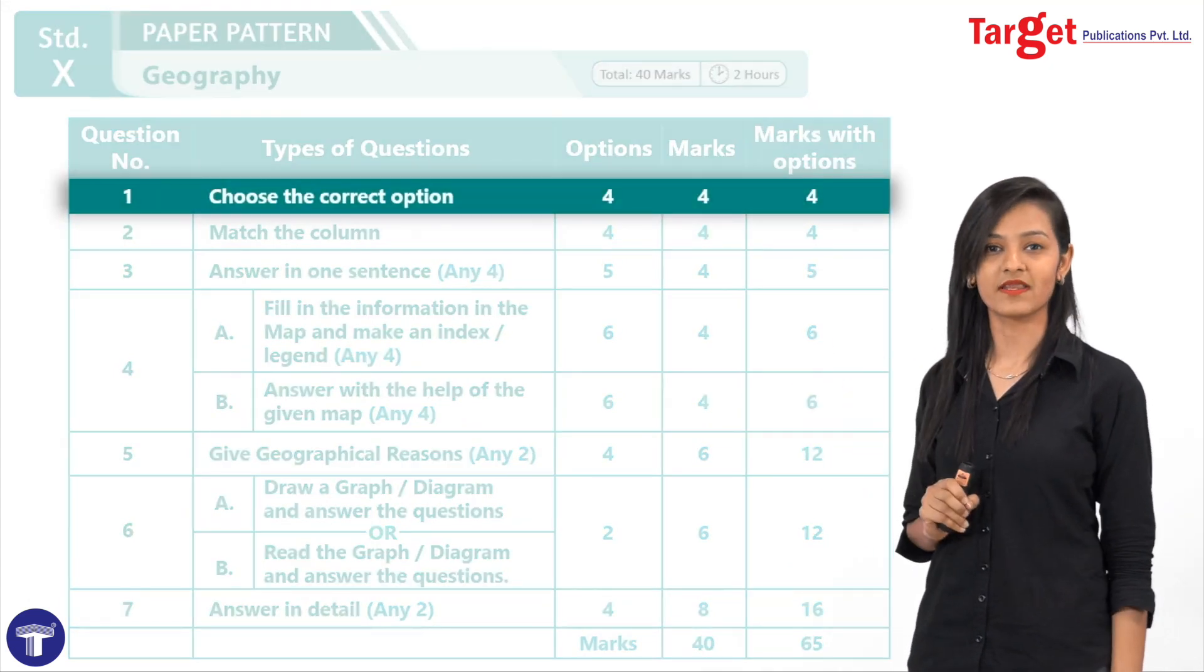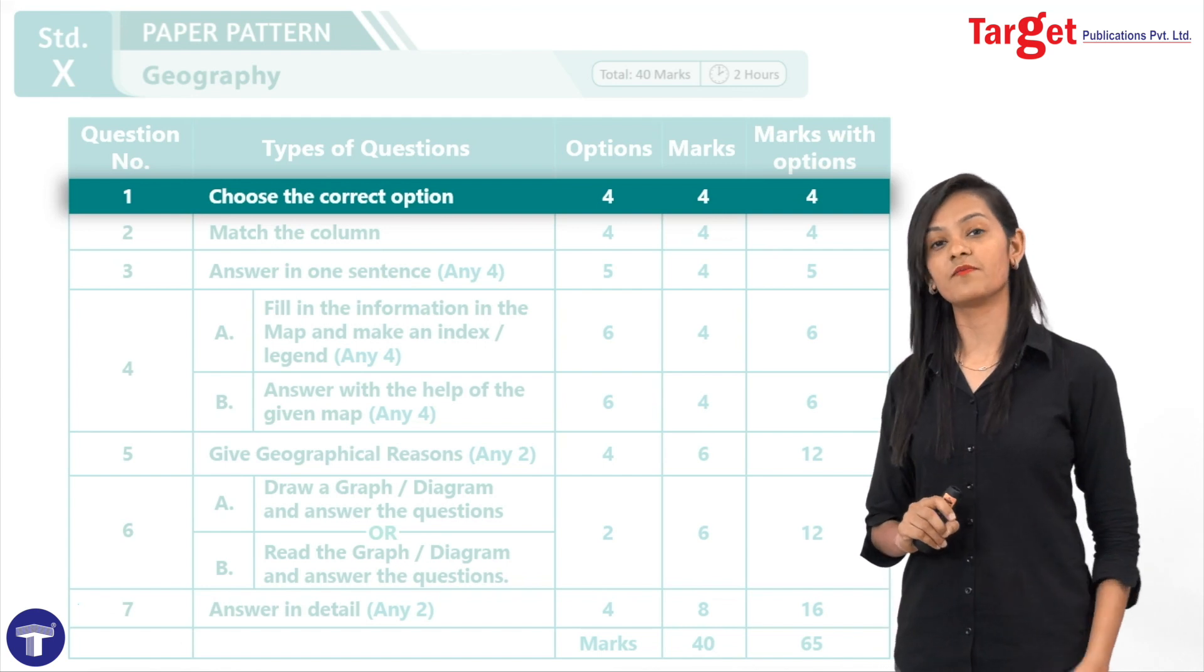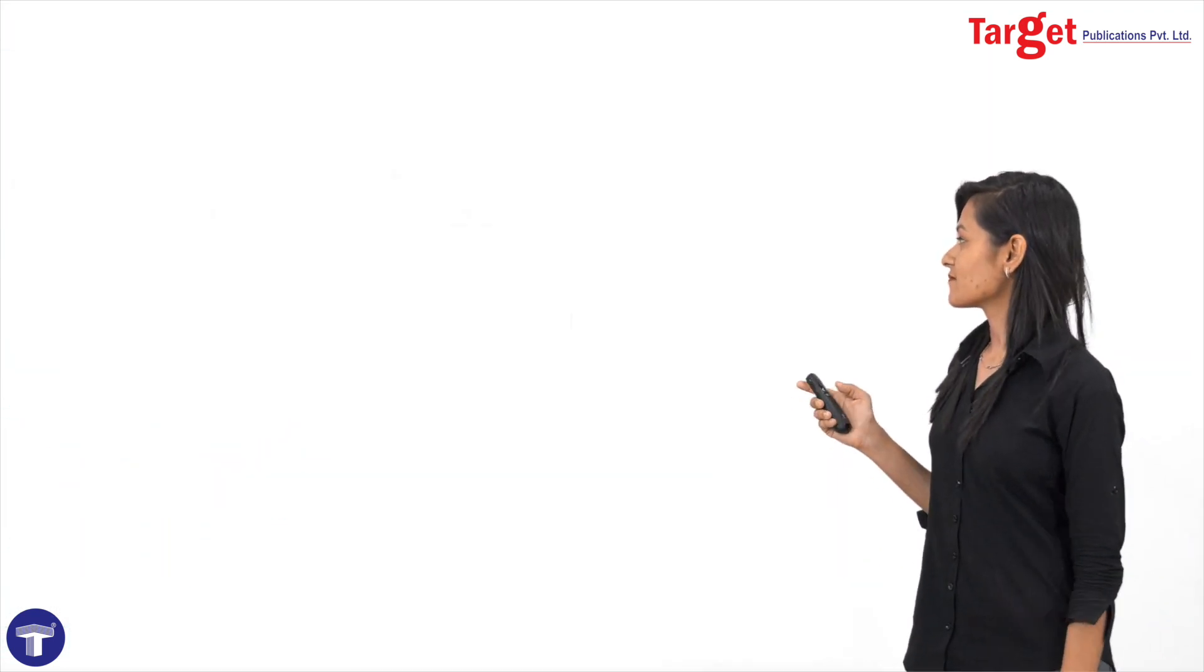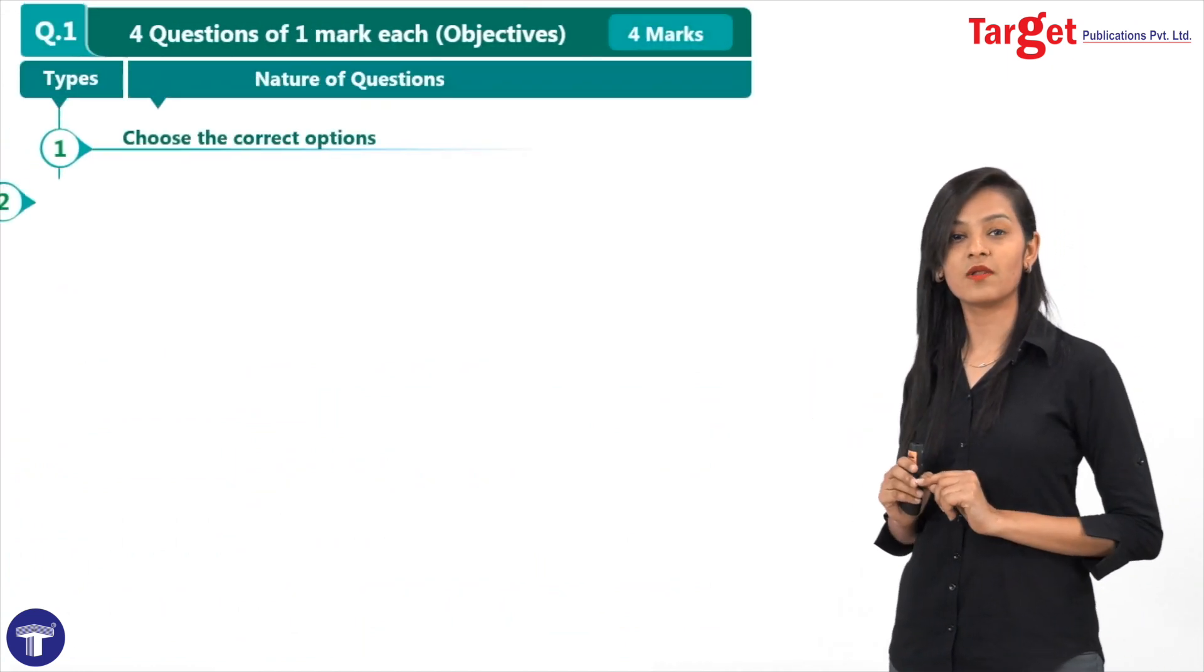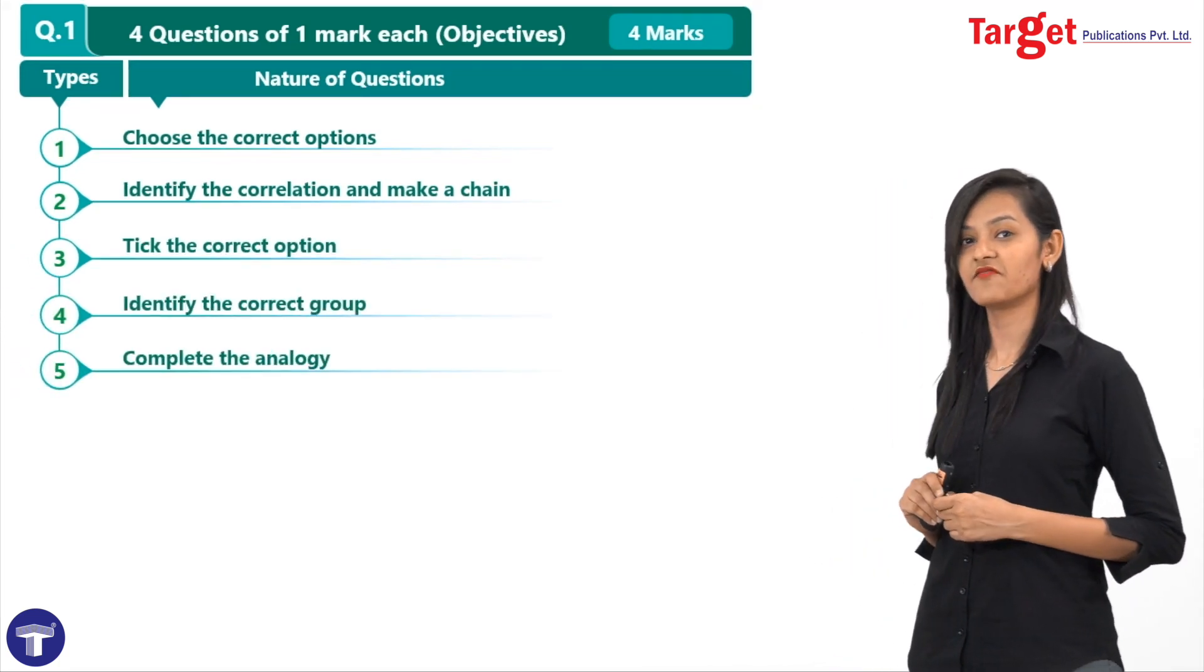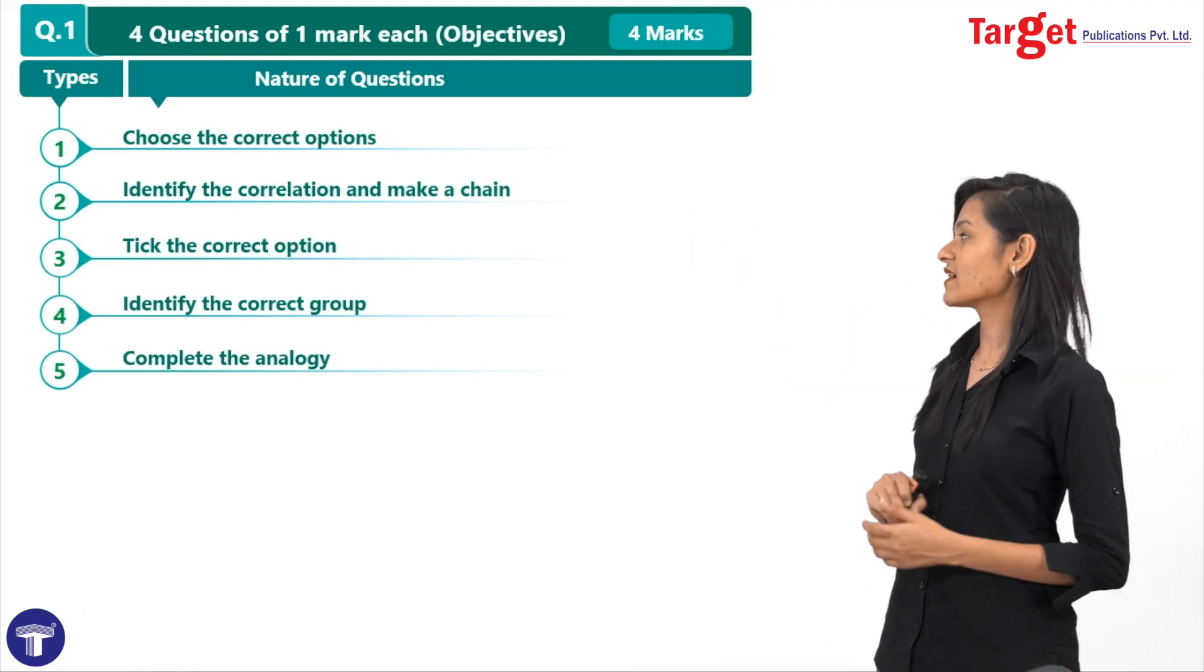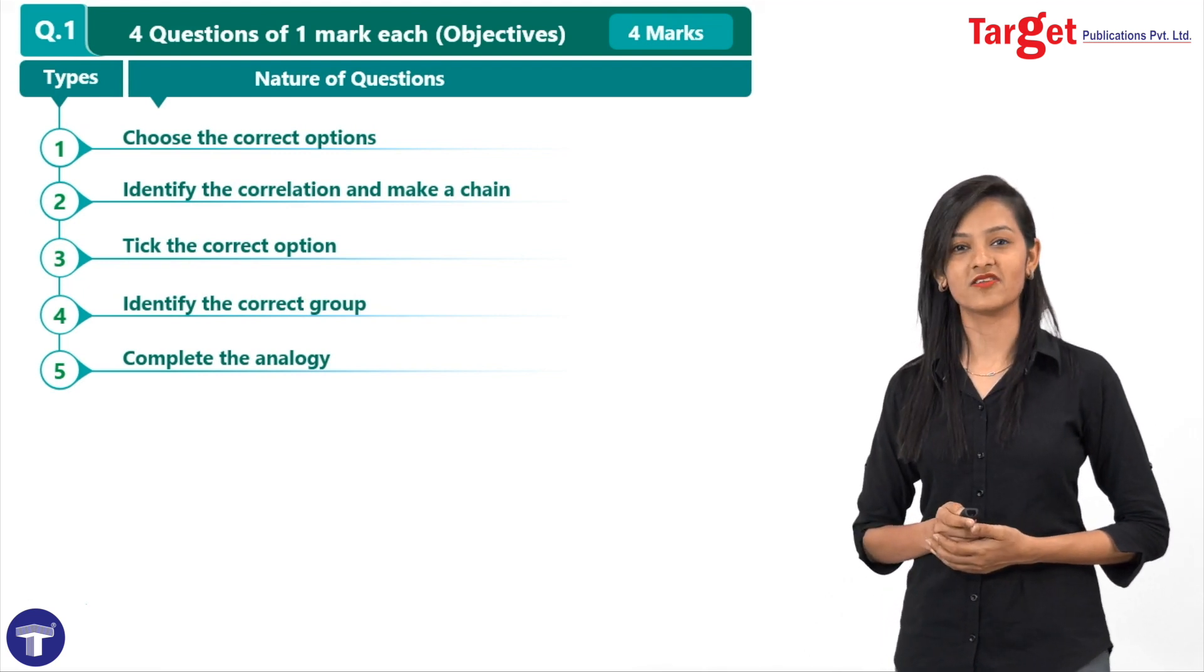Now comes question number one. Question number one is for four marks, of which there will be four questions asked for one mark each. Now as you can see here, not only the question will be in the form of choose the correct option, but there will be other questions asked as well in different patterns like identify the correlation and make a change, pick the correct option, identify the correct group and complete the analogy.